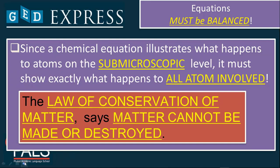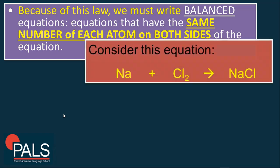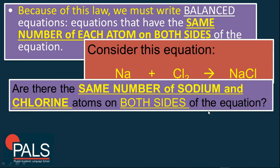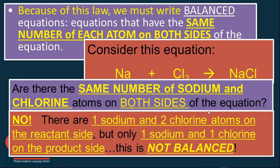Because of this law, we must write balanced equations. These are equations that have the same number of each atom on both sides of that equation. For example, we consider sodium and chlorine. That will give you NaCl. If we're going to count this subscript in here, there are two chlorine and one atom of sodium. But on the product side, there is only one chlorine and only one sodium. In order for us to balance that, we need to consider the number of atoms present on the reaction. Since there are one sodium and two chlorine atoms on the reactive side, but only one sodium and one chlorine on the product side, this is not balanced.